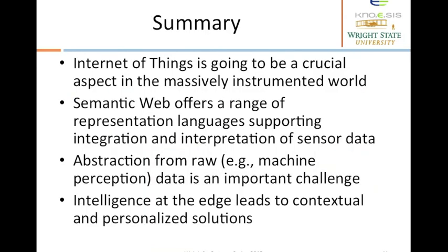In summary, we looked at what Internet of Things is and why it is important. We looked at a brief introduction to semantic web and its extension to semantic sensor data. We explored the idea of abstracting from raw data and why it is important. We also looked at intelligence at the edge as an idea to scale solutions to the Internet of Things domain.